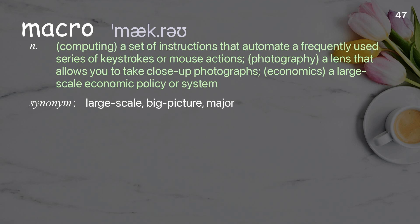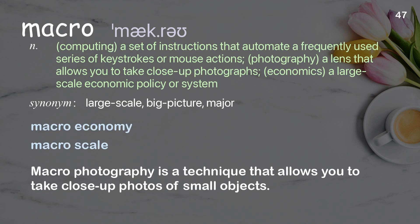Macro: in computing, a set of instructions that automate a frequently used series of keystrokes or mouse actions. In photography, a lens that allows you to take close-up photographs. In economics, a large-scale economic policy or system. Examples: macro scale. Macro photography is a technique that allows you to take close-up photos of small objects.